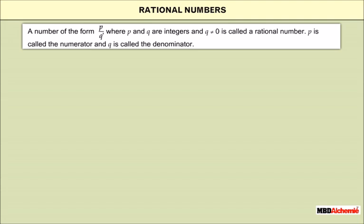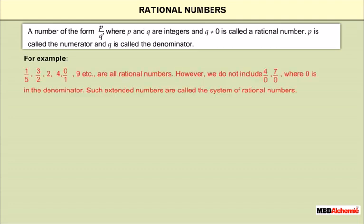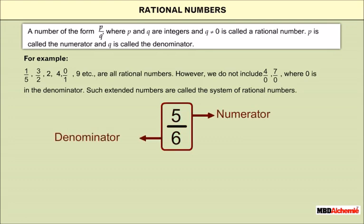p is called the numerator and q is called the denominator. For example, 1/5, 3/2, 2, 4, 0/1, and 9 are all rational numbers. However, we do not include 4/0 or 7/0, where 0 is in the denominator. In the number 5/6, 5 is the numerator and 6 is the denominator. Thus a rational number is of the form p upon q, where p and q are integers and q is not equal to 0.